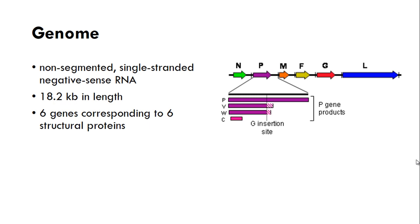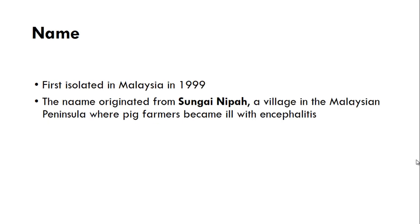The genome is non-segmented, single-stranded, negative-sense RNA, 18.2 kb in length, with six genes corresponding to six main structural proteins. The virus was first isolated in Malaysia in 1999 and the name originated from Sungai Nipah.